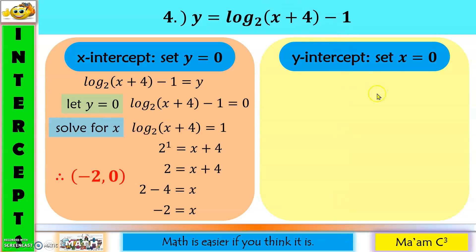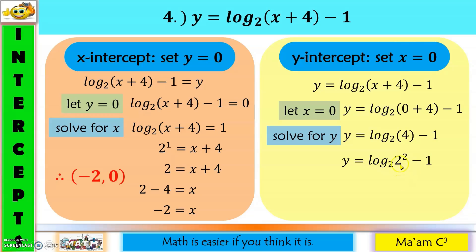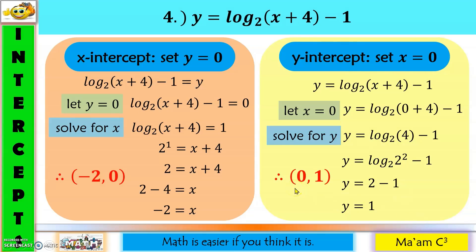For the y-intercept of the fourth example, set x equal to zero. Zero plus 4 is 4; express 4 as 2 squared. Since the base and x are the same, by properties of logarithms the expression equals the exponent, which is 2. So y equals 2 minus 1, which is 1. Therefore, the y-intercept is (0, 1), meaning the graph will cross the y-axis at that point.